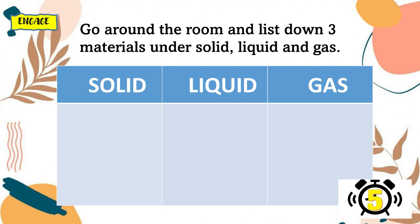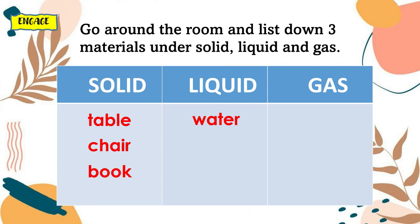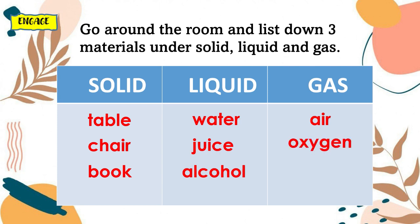Your next task is to go around the room and list down three materials under solid, liquid, and gas. Go! Let's try to check your answers. Under solid, we have table, chair, book. Under liquid, we have water, juice, and alcohol. Under gas, we have air, oxygen, and carbon dioxide. Good job, kids!